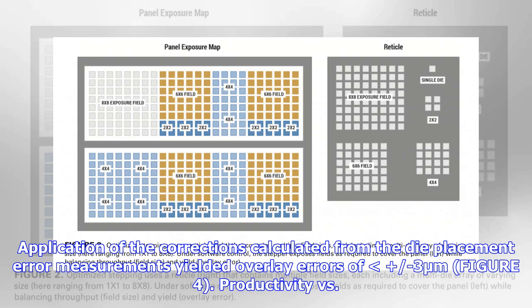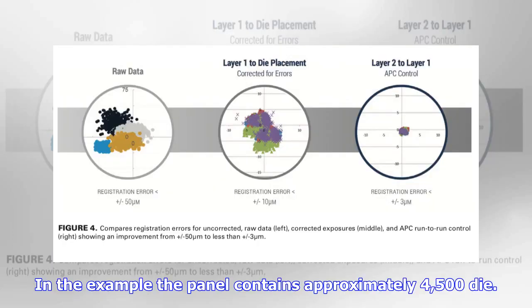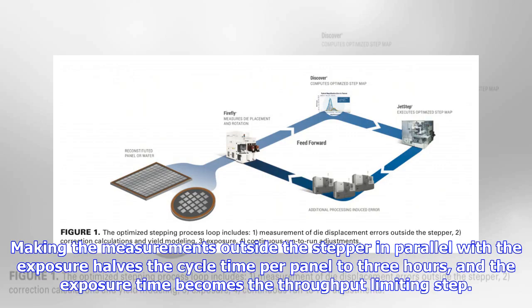Productivity versus yield: Figure 5 illustrates the potential benefits of optimized stepping applied to a panel process. In the example, the panel contains approximately 4,500 die. A conventional serial process, with placement errors measured on the stepper, takes a little over 6 hours, including 3 hours for measurement and 3 hours for exposure. Making the measurements outside the stepper in parallel with the exposure halves the cycle time per panel to 3 hours, and the exposure time becomes the throughput limiting step.